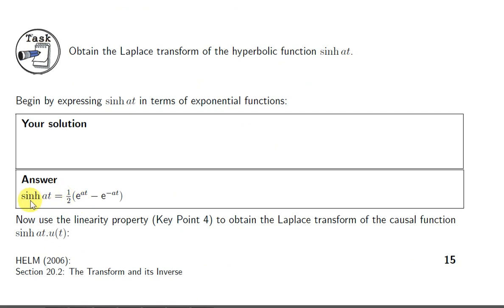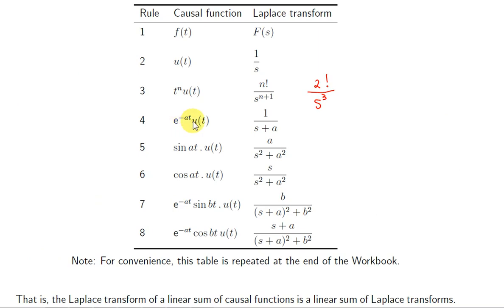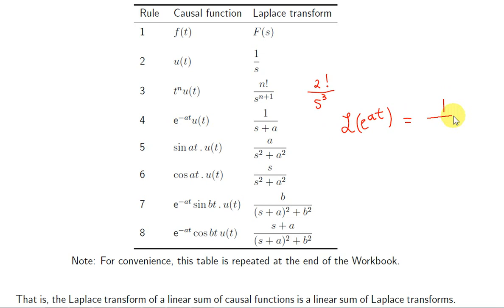Let's look at the transform of hyperbolic sine of at. That's defined to be one half times e to the power of at minus e to the power of minus at. Using the linearity property, we can get the transforms of each of these functions and take the half out. The transform of e to the power of at: we can change the plus a in 1 over s plus a to minus a, which gives 1 over s minus a.